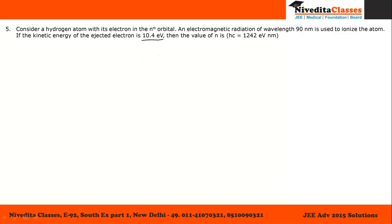For hydrogen, the energy of the electron can be given as minus 13.6 divided by n square if it is residing in the nth orbital. We have given it energy using electromagnetic radiation of wavelength 90 nm. The energy given to it is hc divided by lambda, and this total energy gets converted into the kinetic energy of 10.4 eV.